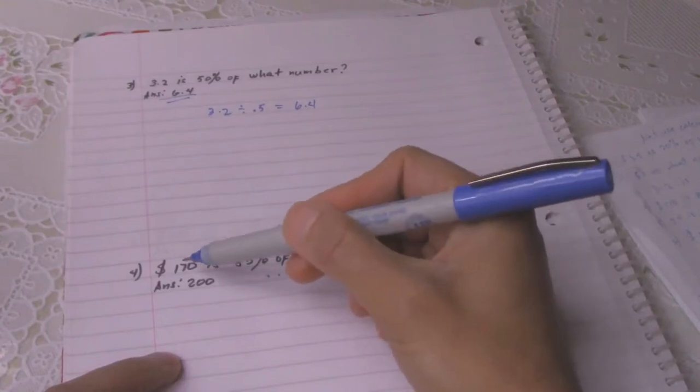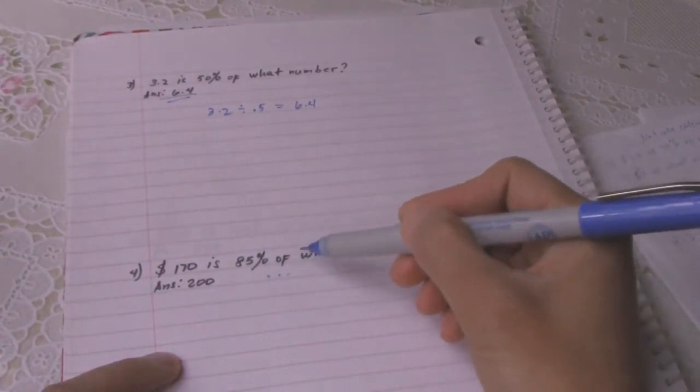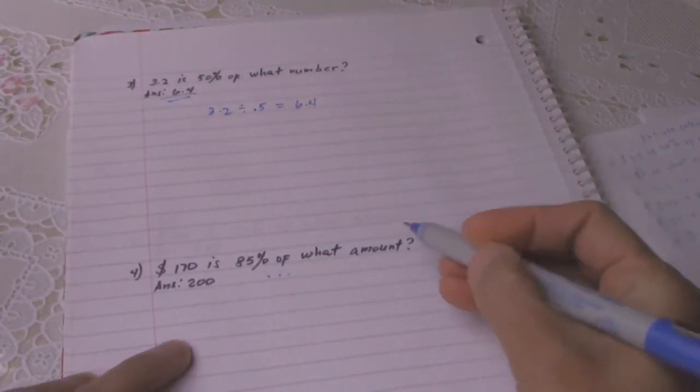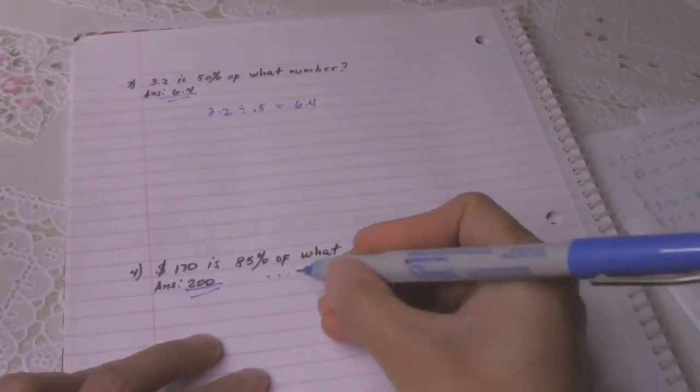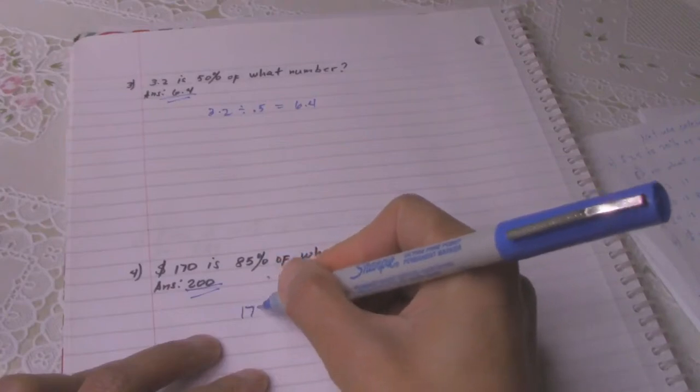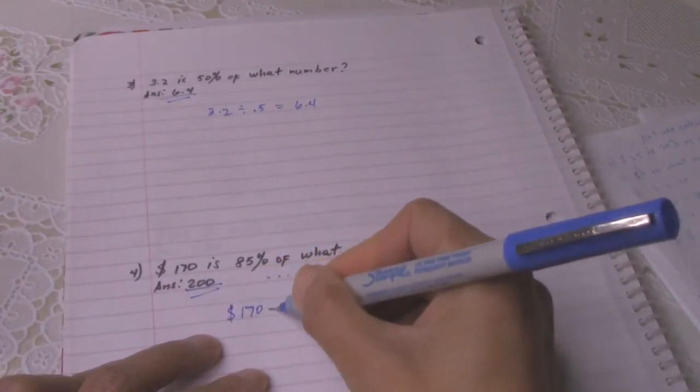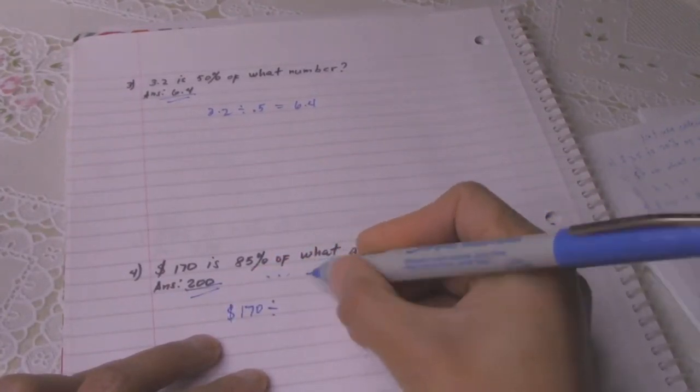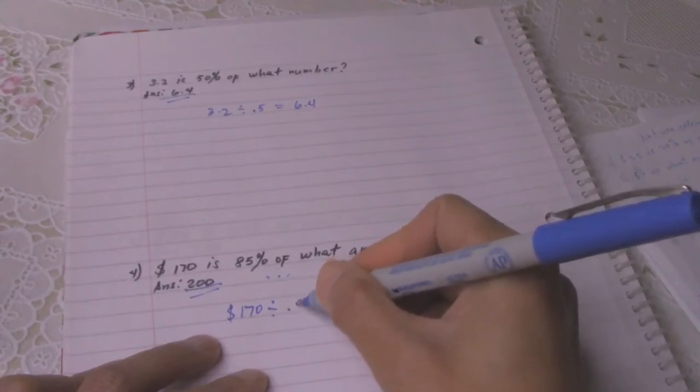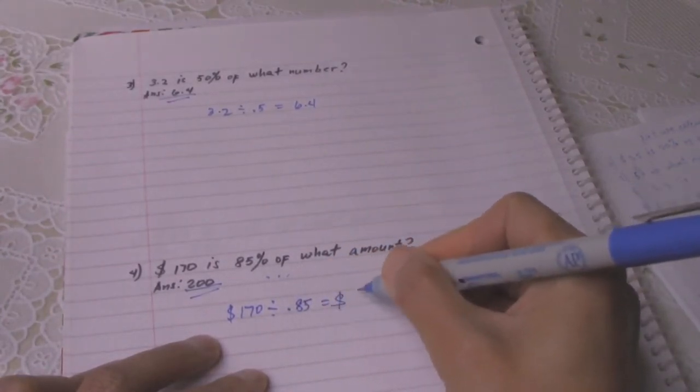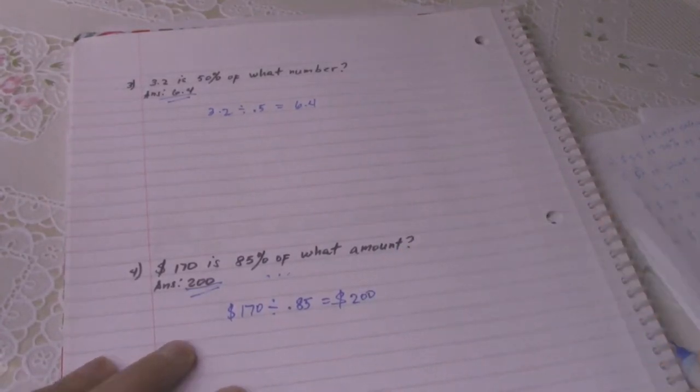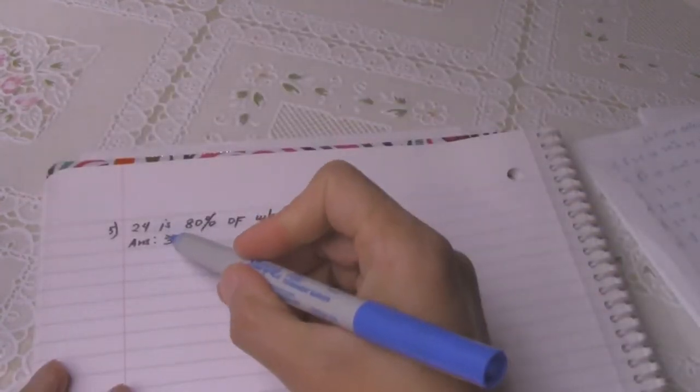Number 4: 170 is 85 percent of what amount? The answer is 200. So how did you get the answer? We'll put 170 dollars divided by 0.85. The answer is 200 dollars.